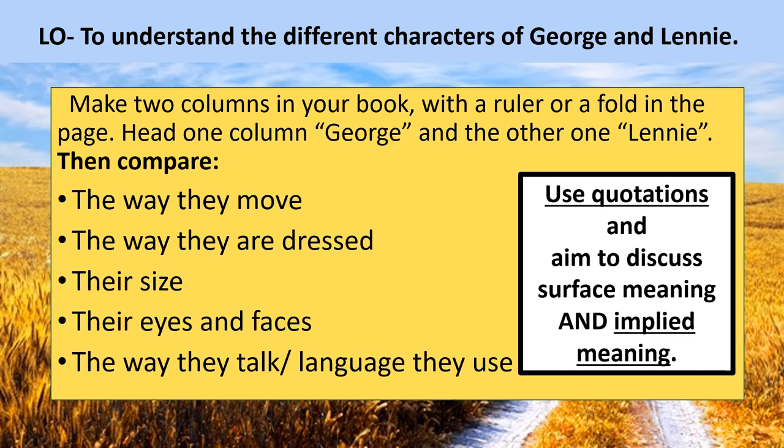In order to show your understanding of the two characters of George and Lenny — which is our learning objective for this lesson — using what's in your workbook, you've got two columns, one for George and one for Lenny. In that table, I would like you to record a comparison of the way they move, the way they're dressed, their different sizes, their eyes and their faces, and the way they talk or the different language they use. I'd like this to look like quotations from the novel, and I'd like you to aim to discuss both surface meaning and implied meaning.